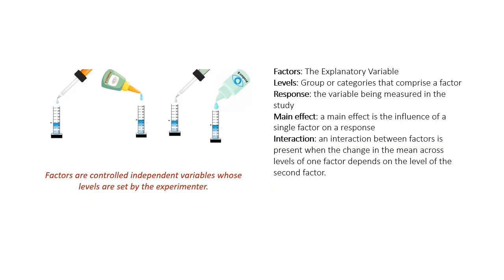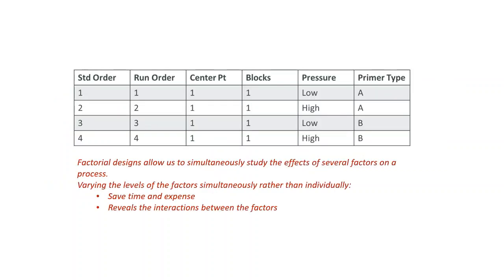In this chapter, we will build on what we already learned in the ANOVA chapter to analyze factorial designs. Let's return to the paint adhesion experiment. ABC company can use a factorial design which allows us to simultaneously evaluate the effects of several factors on a process. A full factorial experiment measures all combinations of the experiment factor levels. Varying the levels of the factors simultaneously rather than one at a time has two benefits. It saves time and expense. It reveals the interaction between the factors.